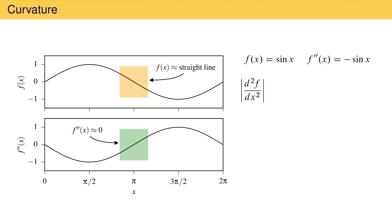When the absolute value of the second derivative of a function is zero, the original function is approximately a straight line.